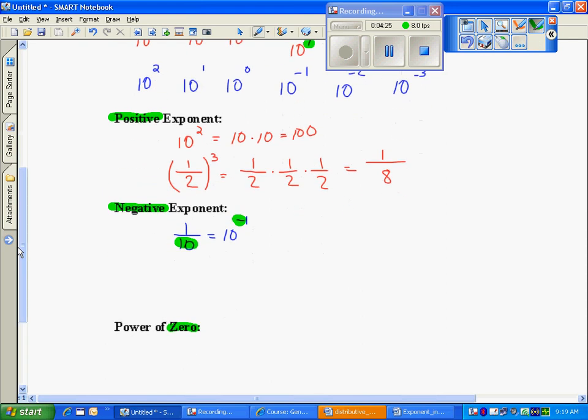So if I have two to the negative one, that just means two belongs in that denominator. If I have x to the negative four, it means that x belongs in the denominator, but the power still says multiply it by itself four times.